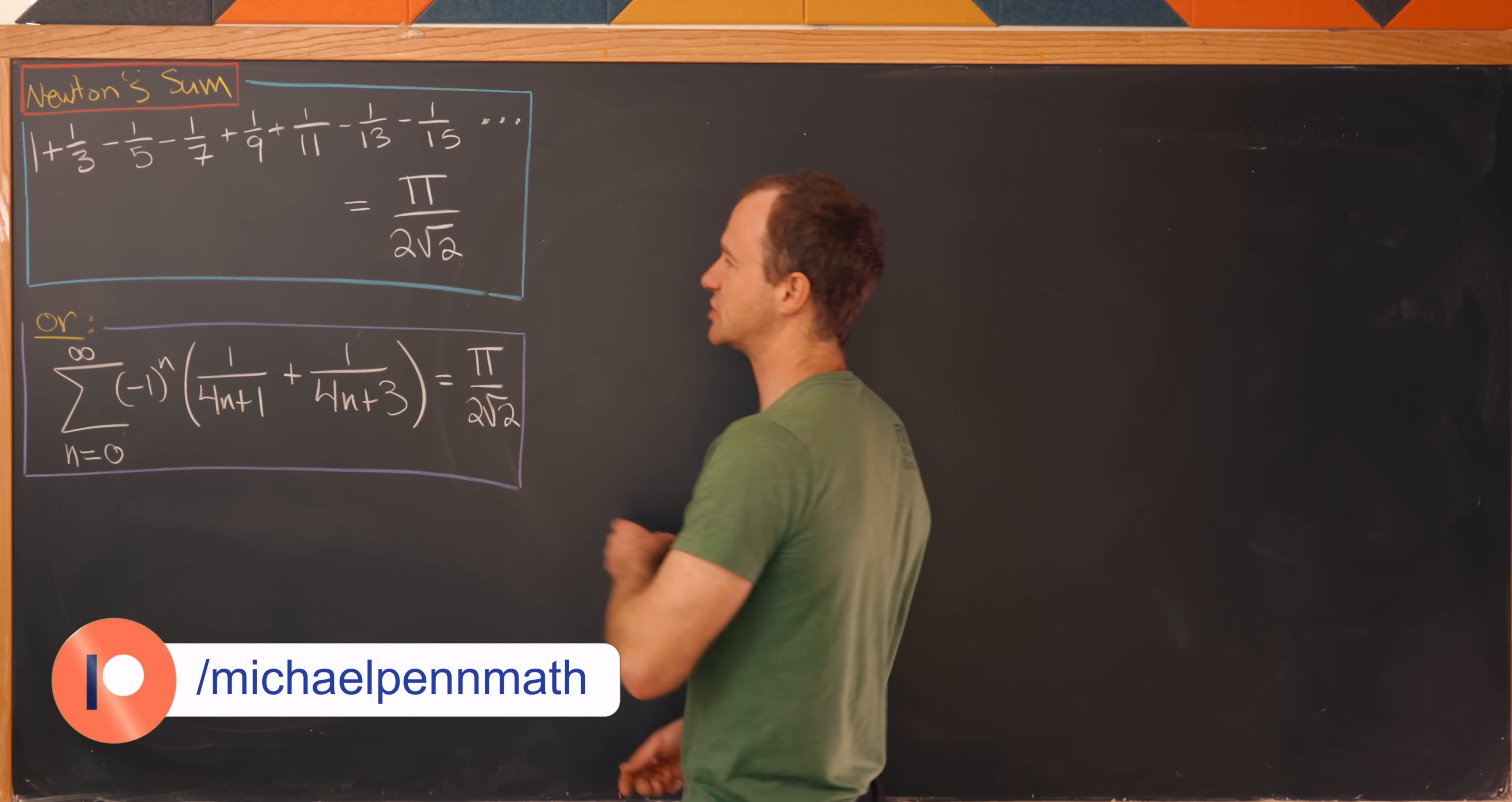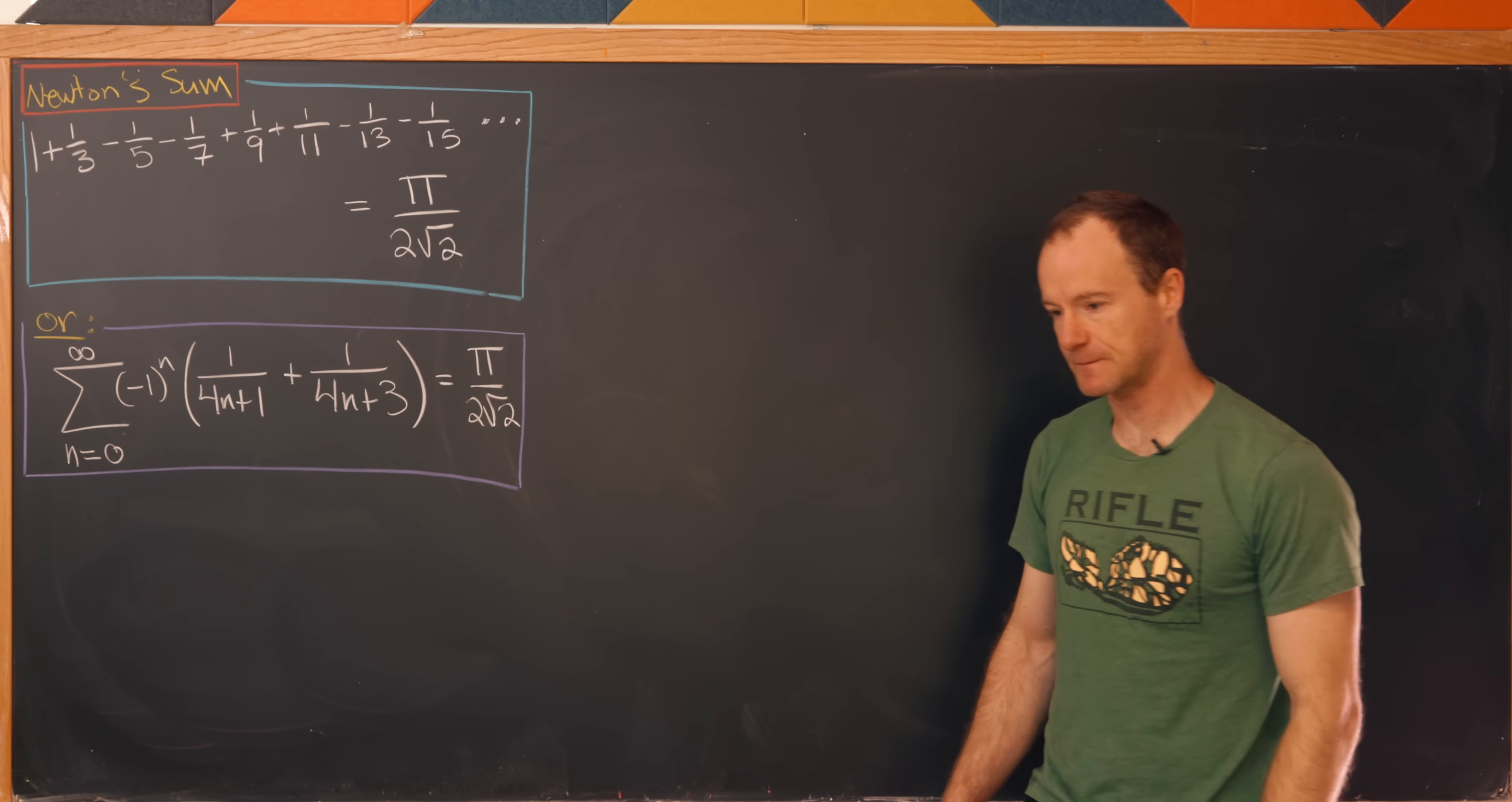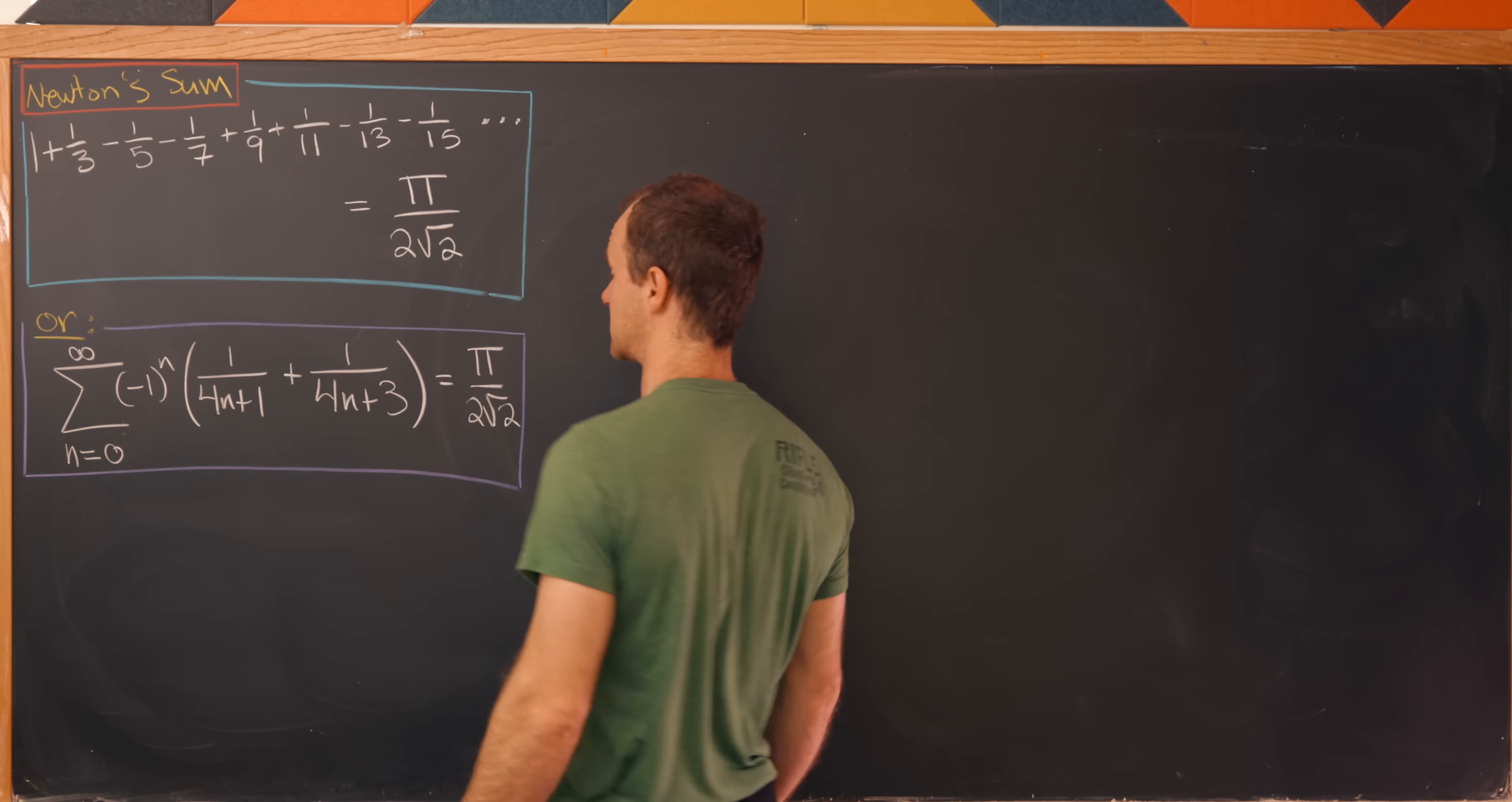Our final goal will be to show that 1 plus 1/3 minus 1/5 minus 1/7 plus 1/9 plus 1/11 minus 1/13 minus 1/15 continuing on forever is equal to π over 2 times the square root of 2. Let's notice the general form of this big sum can be written as alternating chunks of sums of reciprocals of odd numbers. We've got two that are added together, two that are subtracted, two that are added, and so on and so forth.